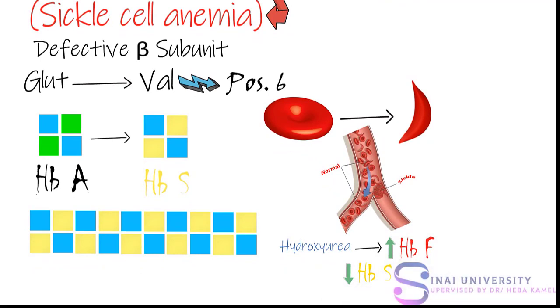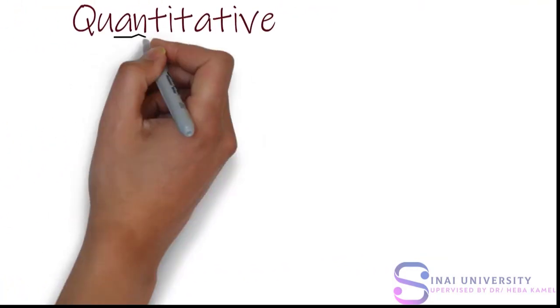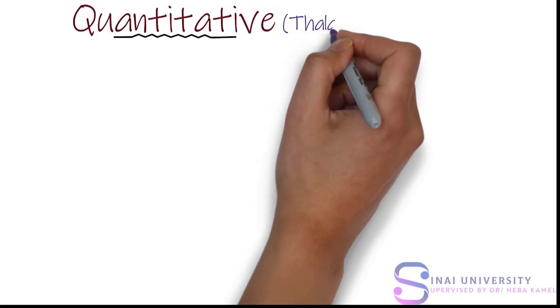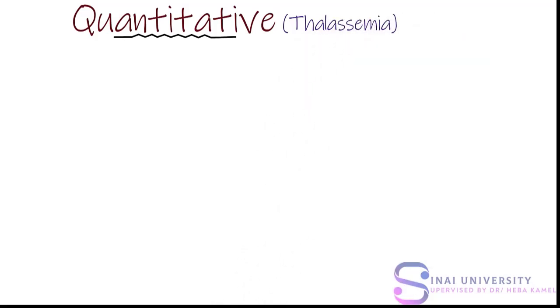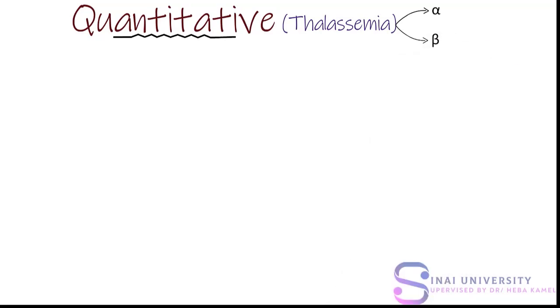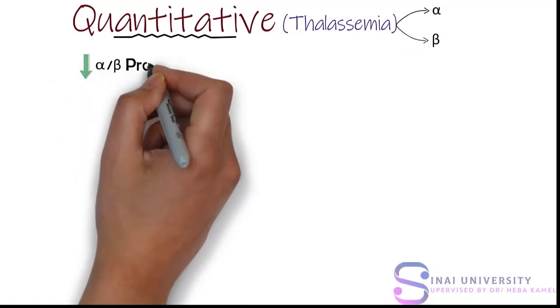Now let's look at another category: quantitative disorders, which are abnormal numbers of hemoglobin subunits that cause pathology. An example of this category is thalassemia. There are two types of thalassemia: alpha thalassemia and beta thalassemia. It occurs due to a lack of alpha or beta production.